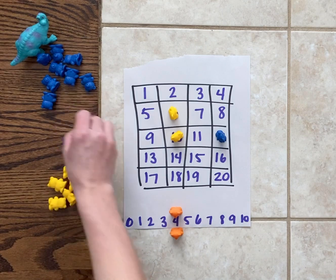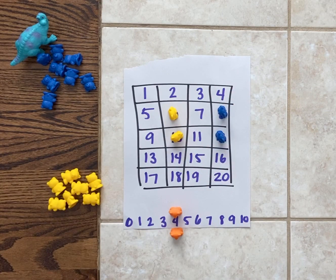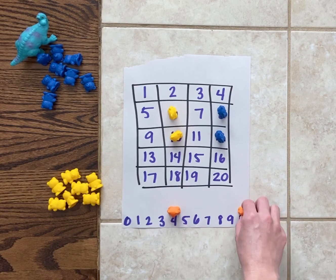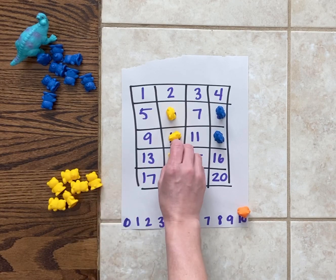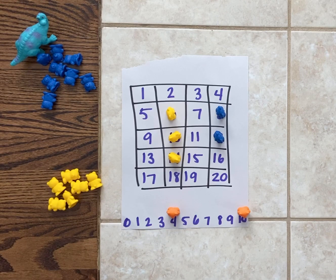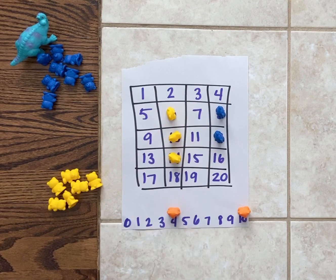Now, I know if I move this marker over back to the 10, 10 and 4 is 14. Now don't forget you can try to block your opponent, so if dinosaur doesn't want me to win, to get 4 in a row, he might want to take one of these squares from me if he can.